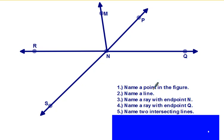Now this says name a point in the figure. So you could say point M. You could have any of these points would do, but you write the word point and then use capital letters. Name a line. So let's name this line right here. We would say line RQ. We could also name this one line SP.